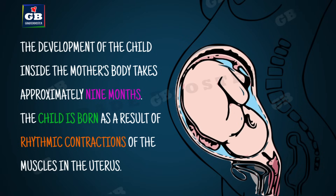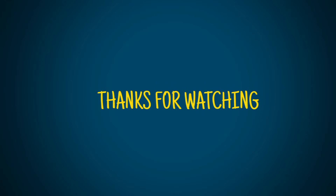The development of the child inside the mother's body takes approximately nine months. This period is called the gestation period. The child is born as a result of rhythmic contractions of the muscles in the uterus.